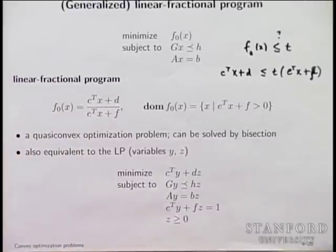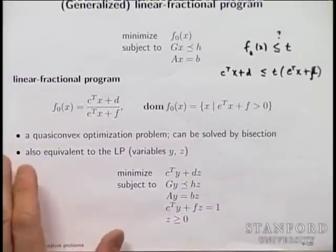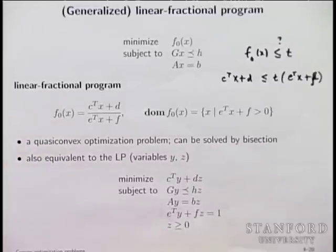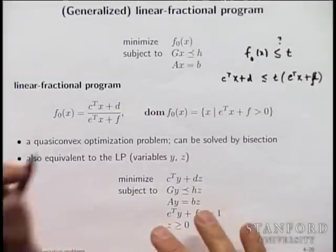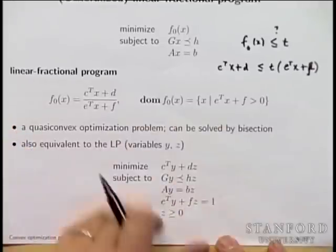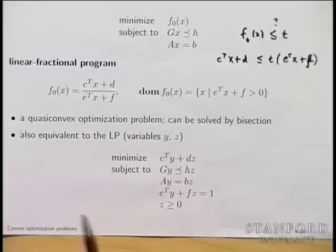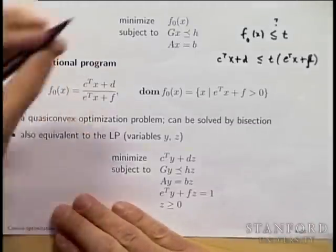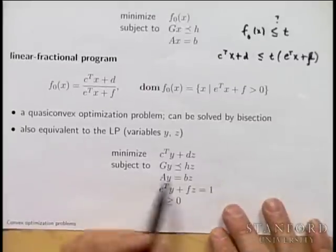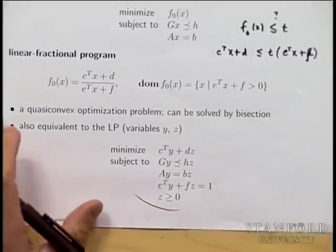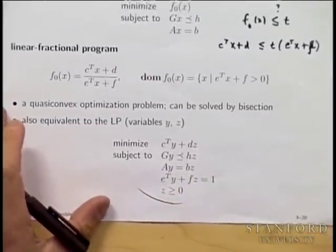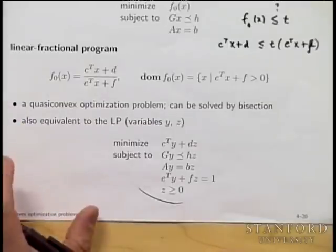Let's see how to do this. It turns out this is nothing but the perspective transformation — some people call this homogenization. What you do is write down the equivalent LP. I'll give you some of the argument; the full argument you can find in the book.